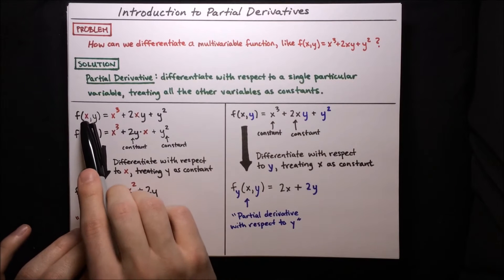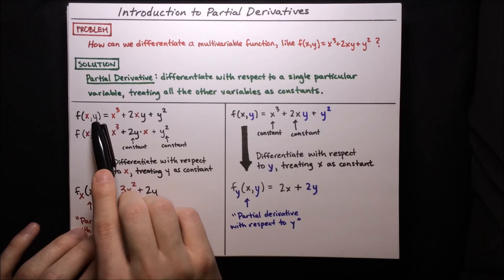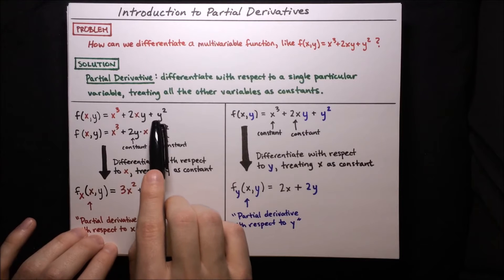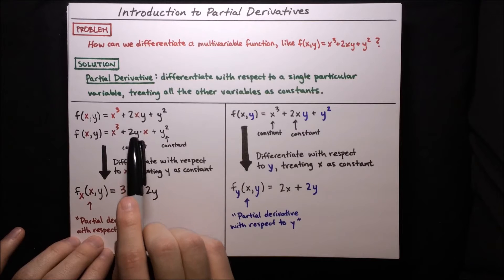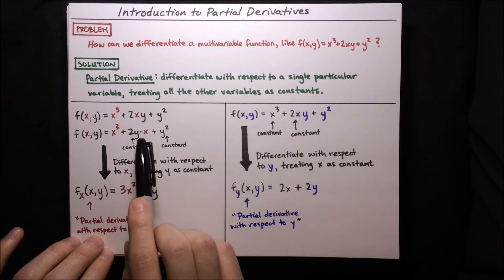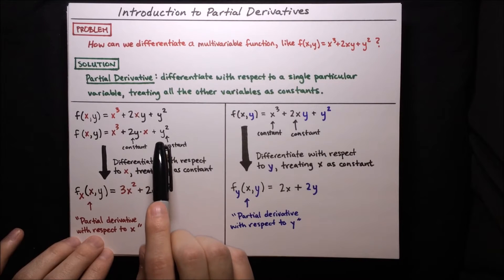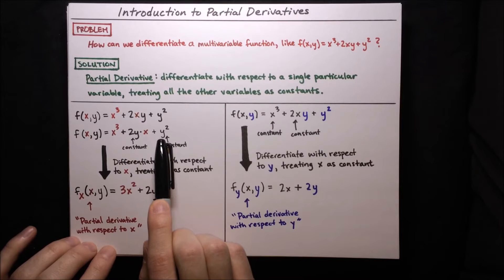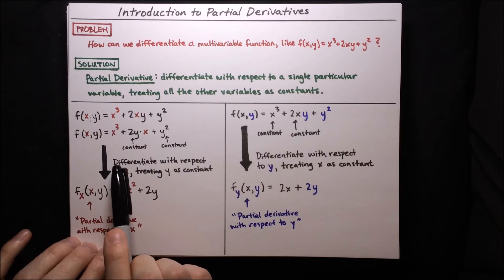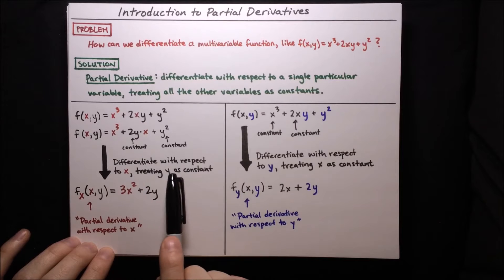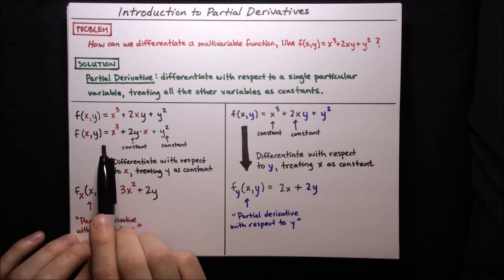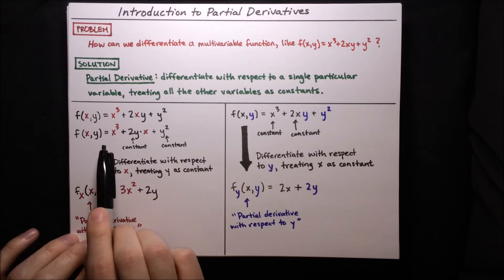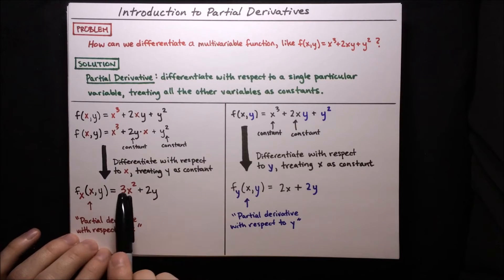We'll write x highlighted because that's our variable, and y in dark because y is just like a constant. We can rearrange: we've got x³, and then 2y times x — where 2y is just like a constant. y² we treat as a constant too. Now differentiating with respect to x: the first term x³ gives 3x².